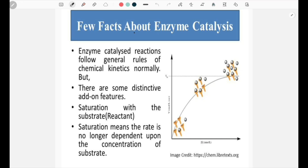Before starting the derivation of the Michaelis-Menten equation, let us discuss a few facts about enzyme catalysis. Enzyme-catalyzed reactions follow the general rules of chemical kinetics under normal conditions, but there are some distinctive add-on features — we are going to get something extra. One such thing is saturation, which means there comes a stage in enzyme-catalyzed reactions in which the concentration of the reactant is no longer effective on the rate of reaction.